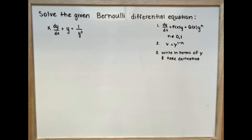Solve the given Bernoulli differential equation: x multiplied by dy over dx plus y is equal to 1 over y to the power of 2.